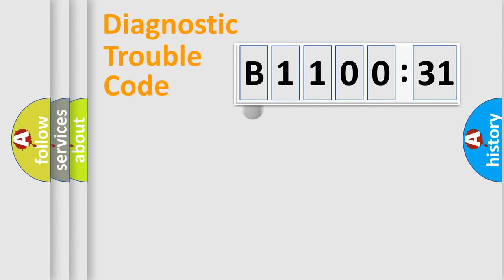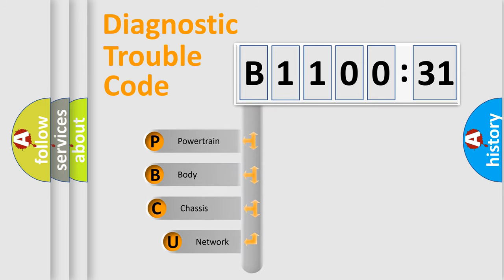First, let's look at the history of diagnostic fault code composition according to the OBD2 protocol, which is unified for all automakers since 2000. We divide the electric system of automobile into four basic units.